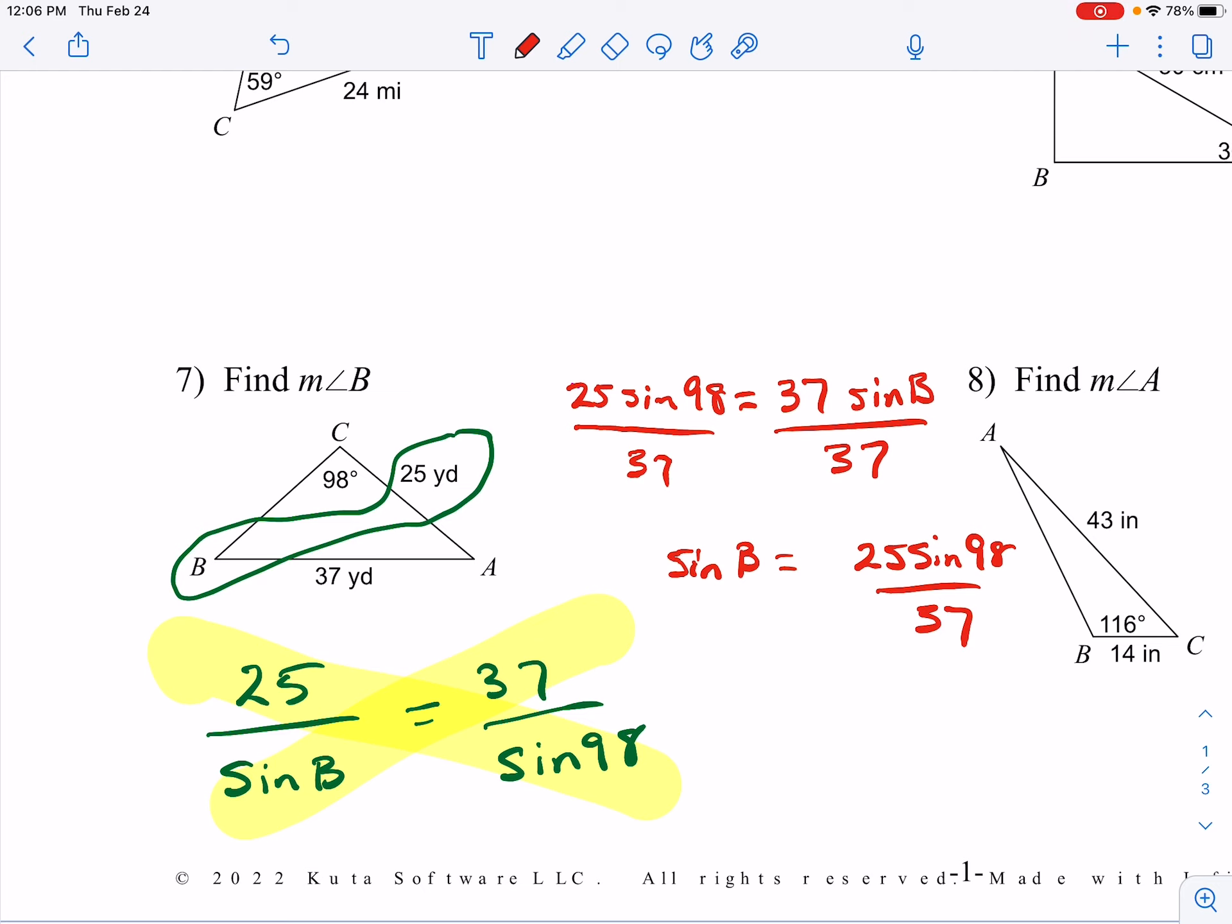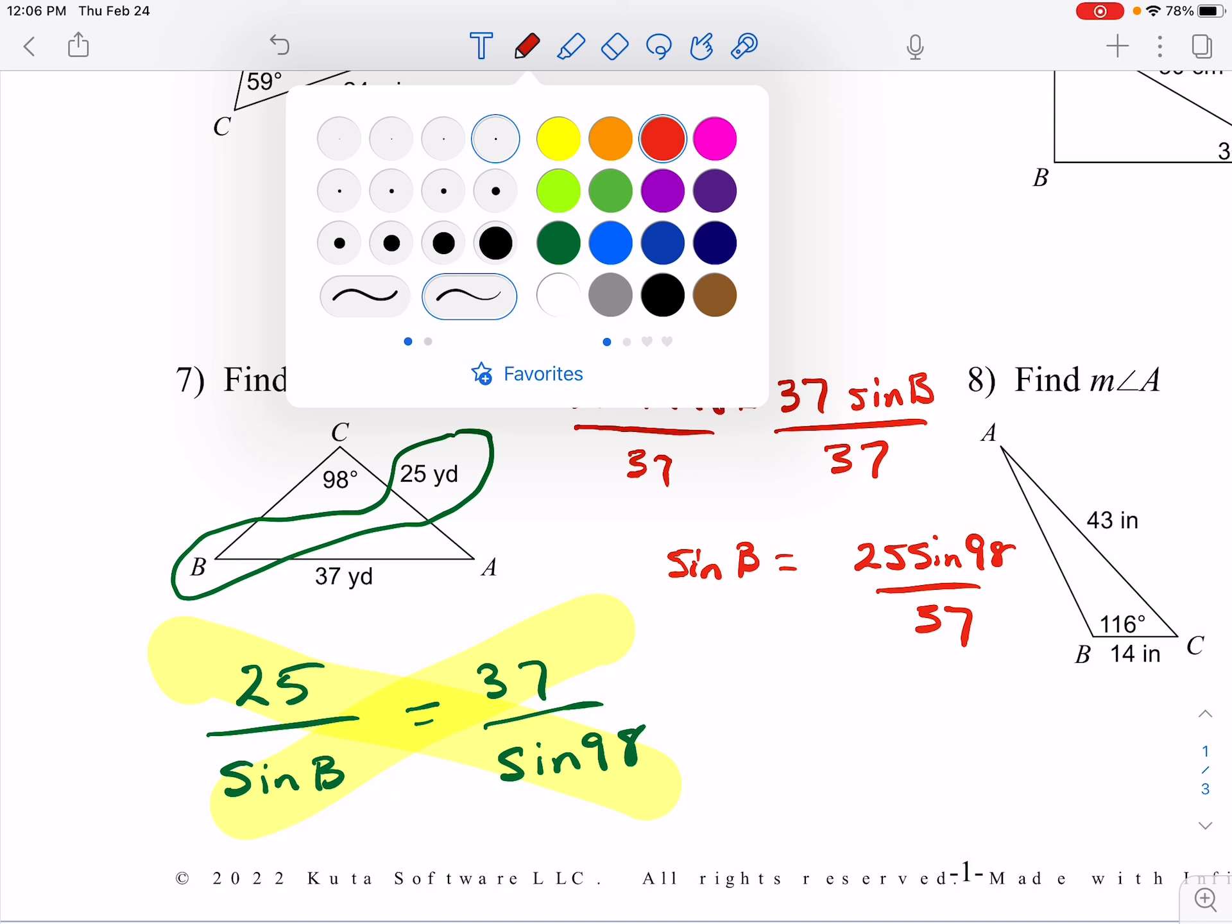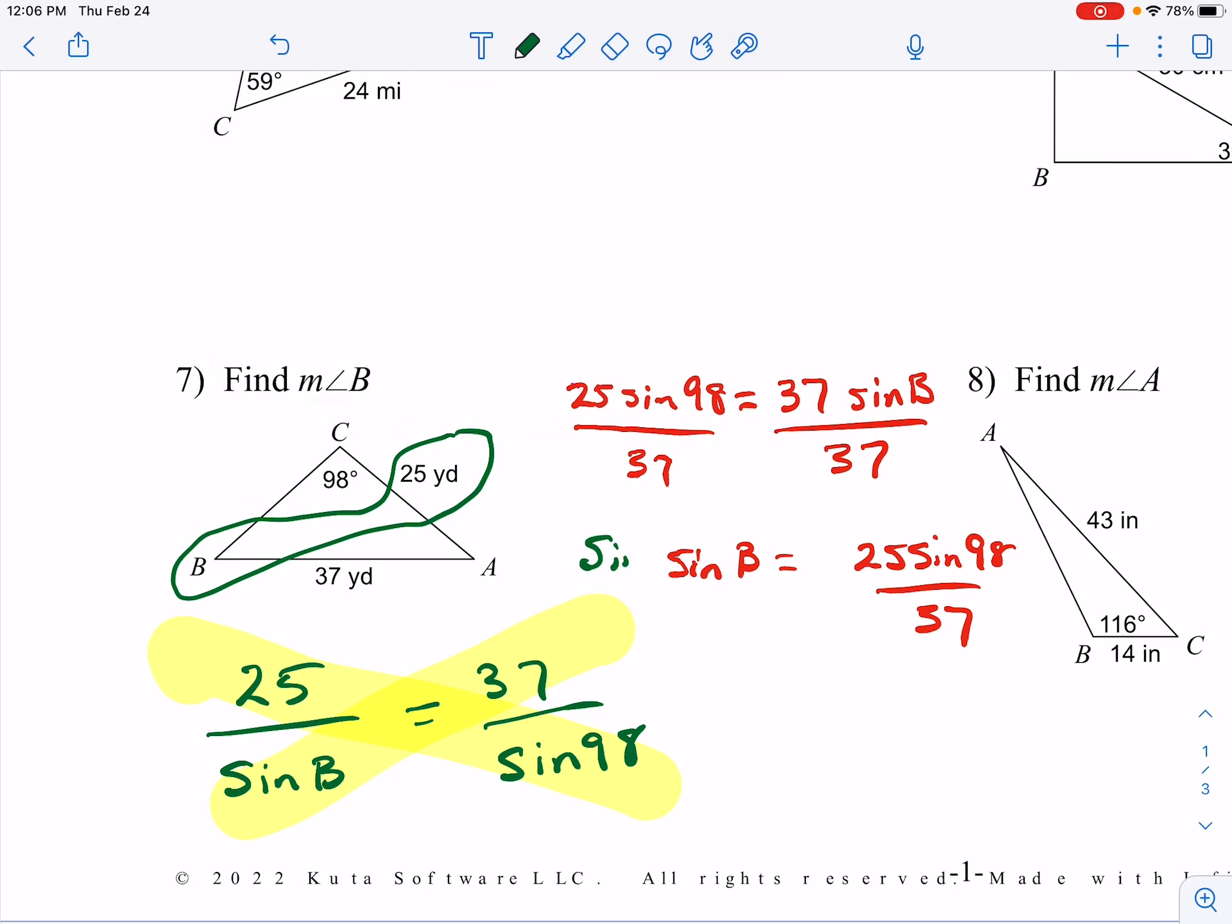So the sine of B is equal to 25 sine 98 over 37. I don't want the sine of B, I want angle B by itself. In order to get B by itself, I'm going to do the inverse sine on both sides. So angle B is equal to the sine inverse of 25 sine 98 over 37.